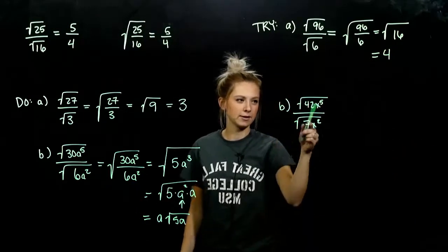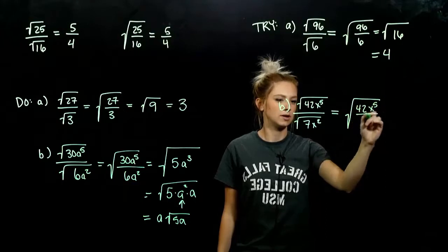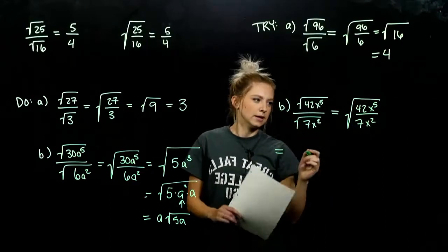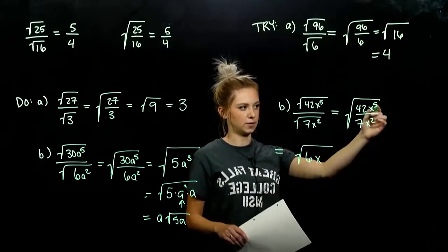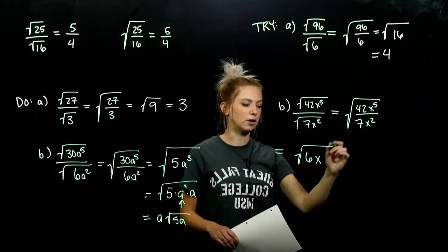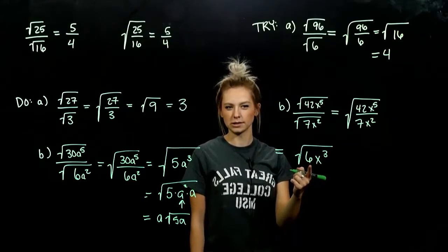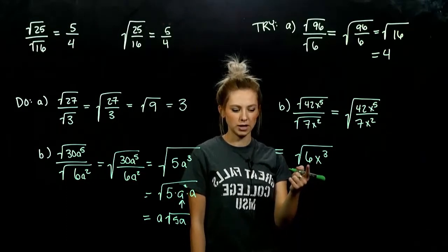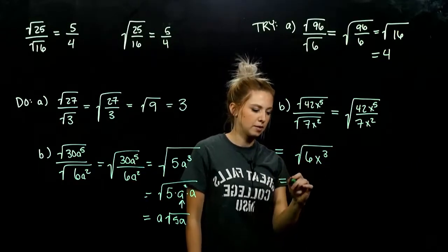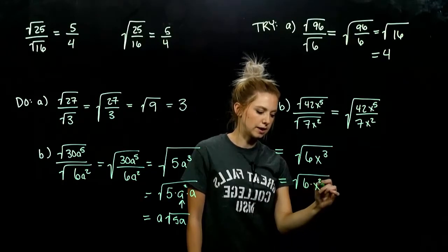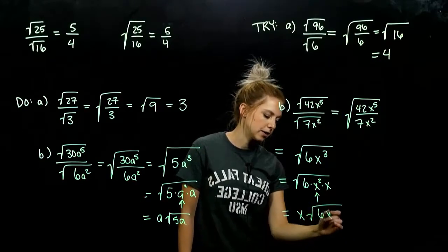Same story for B down here. Again, right now, trying to evaluate individually isn't very helpful. But if we actually do the division underneath one radical, 42 divided by 7 gives me 6. And I've got how many x's left over? I had 5 up top, 2 down below, so I've got 3. And 6, can we break that into a perfect square and something else? It's even. If it was going to be divisible by something, it would be 4, since it's even. But it's not. So we can't break that one down. But x cubed, again, we can break it up into x2 and x. The only perfect square that's going to evaluate out comes from x squared. And we have our leftovers.